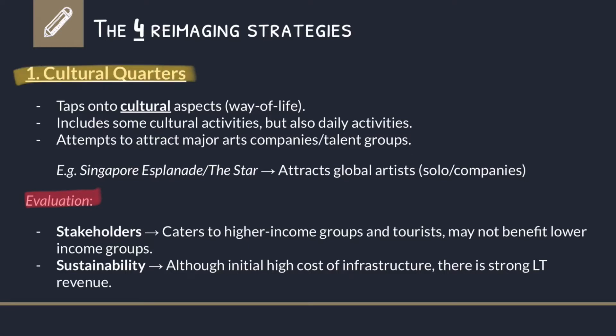The first strategy is cultural quarters. Cultural quarters is basically a way of life — don't think of it as a strategy just to enhance culture in the city. It refers to the day-to-day activities of the city, what goes on on a daily basis. Cultural quarters aim to attract major arts companies or talent groups, solidifying the culture that a country has. For instance, in Singapore you have the Esplanade or The Star, which attracts a lot of foreign artists to perform there.